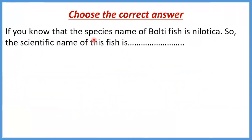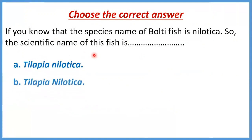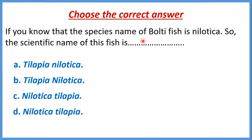سؤال تاني: if you know that the species name of the bulky fish is nilatica, so the scientific name of the fish is what? إحنا عارفين إن الspecies بيجي second name، فندور على nilatica في الchoices كـsecond name. هنلاقيها موجودة في number A و number B. هنختار A — عشان هنا مكتوب الgenus start with capital letter والspecies start with small letter. أما B عاملة الاثنين بالcapital letter، فالcorrect choice هو number A.